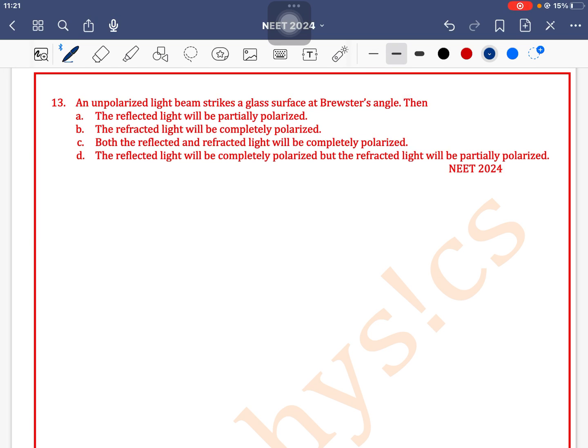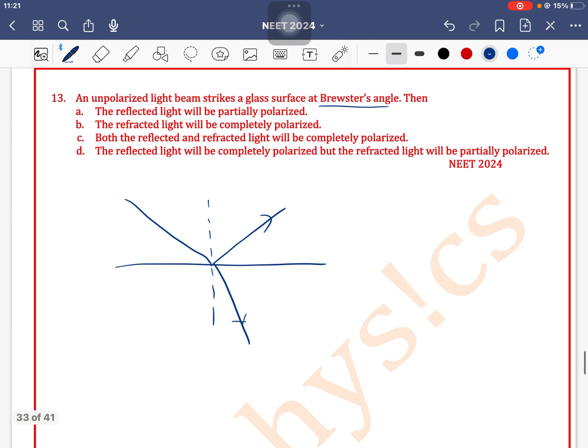An unpolarized light beam strikes a glass surface at Brewster's angle. This is a direct question based on the topic Brewster's law. We know that when a ray of light is incident at an angle which is called the polarizing angle, then the reflected ray of light and refracted ray of light behave differently.